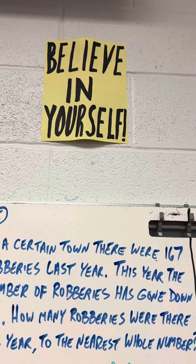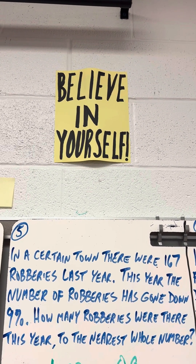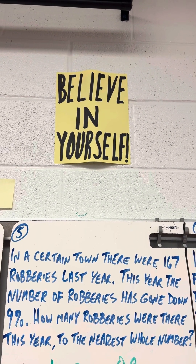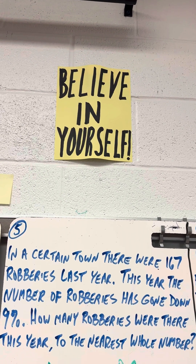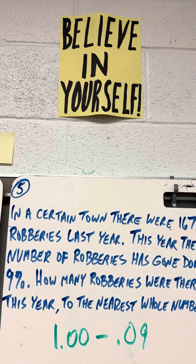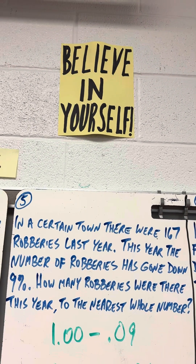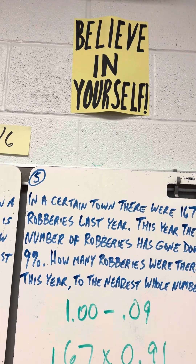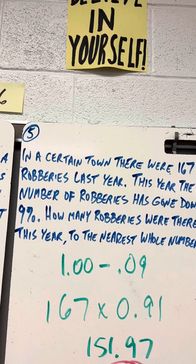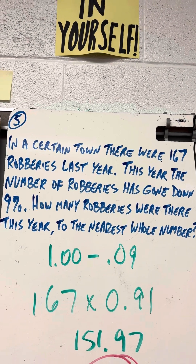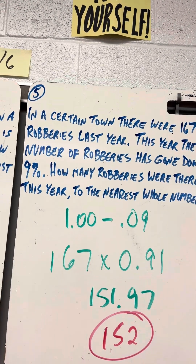In a certain town, there were 167 robberies last year. This year the number of robberies has gone down 9%. How many robberies were there this year to the nearest whole number? So you take 1.00 minus 0.09, or 167 times 0.91, which is 151.97. To the nearest whole number, that's 152.